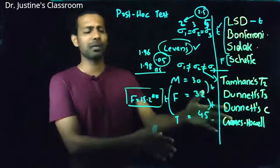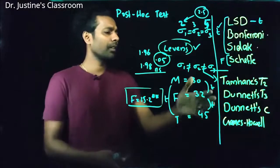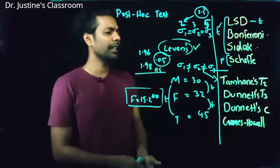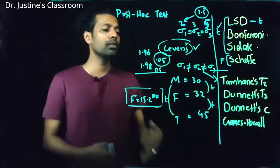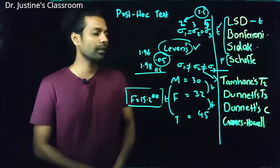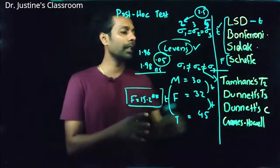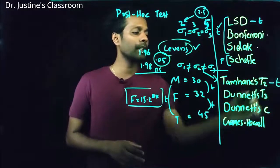Now, what about this kind of things? Let's say Tamhane's T2. This is used when equal variances are not assumed. Now this is based on T distribution. This particular thing is based on T distribution.